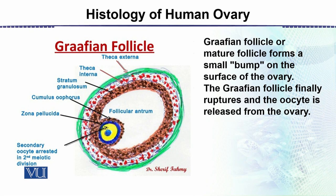In the diagram we can see that centrally placed is the secondary oocyte, which is the egg. This is surrounded by the zona pellucida. There are different layers of cells: the follicle cells, the follicular antrum, and the cumulus oophorus, which is also made of follicle cells that are loosely packed, and then the stratum granulosum.